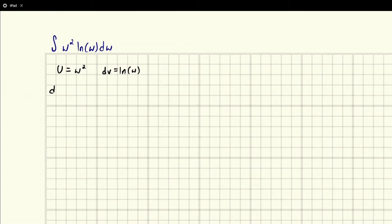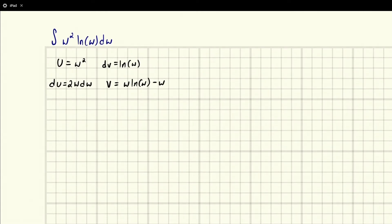So if we take the derivative of u, we're going to get 2w dw. And if we integrate this, we're going to get v is equal to, and the integration of the natural log of w is, I remember it as t ln t minus t just because it's kind of catchy. You could derive it from integration by parts if it's not coming off the top of your head. So that would be w ln w minus w.